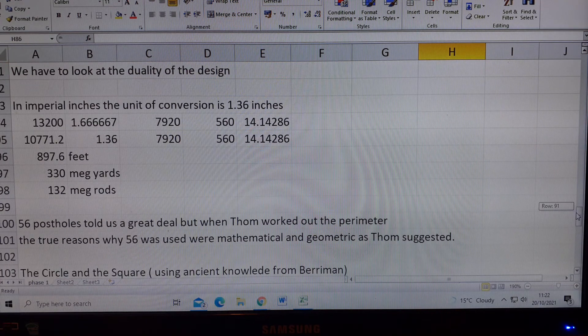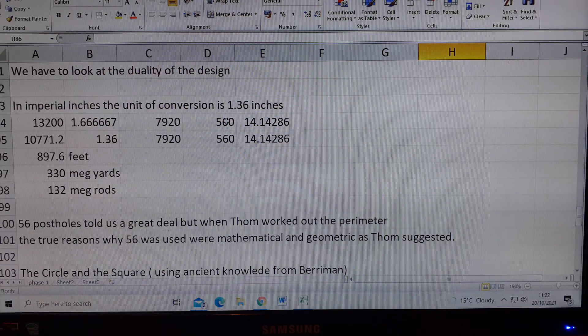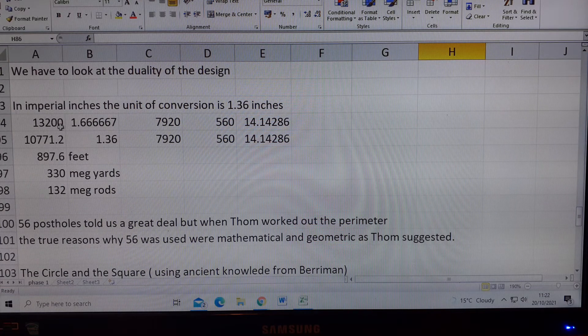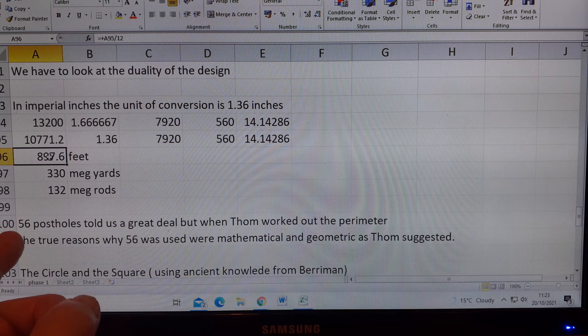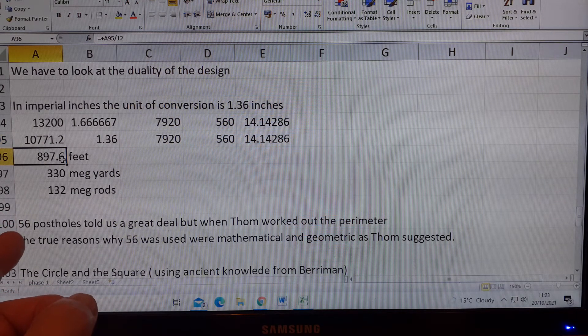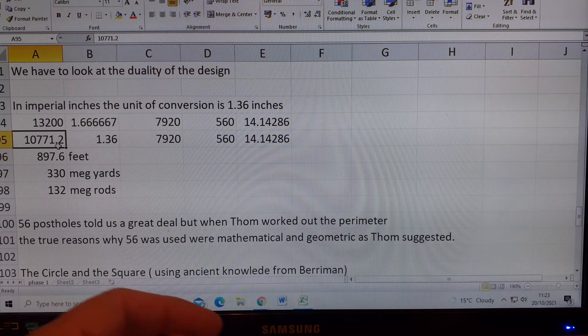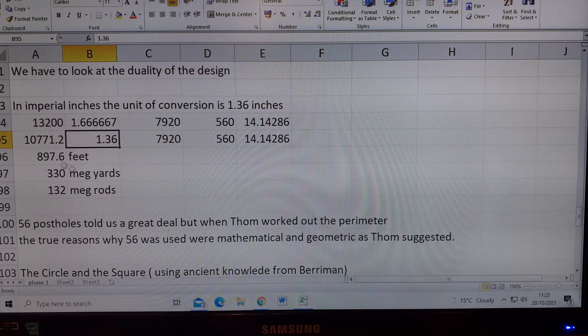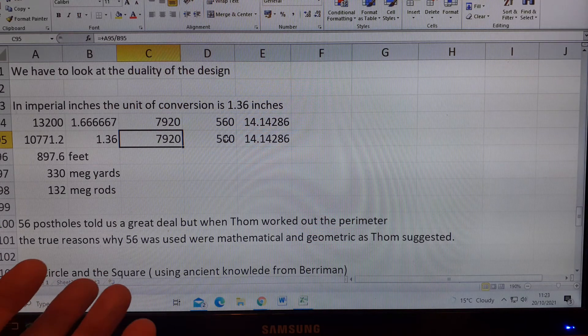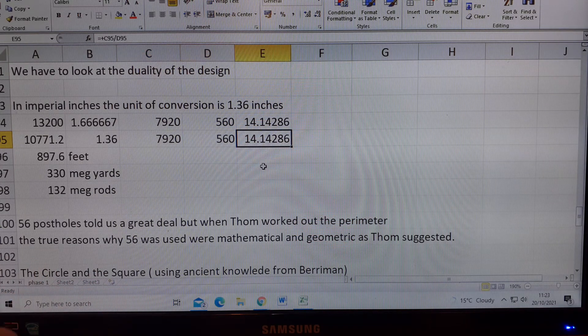In imperial inches, the unit of conversion is 1.36 inches. The circle is 897.6 feet, the Aubrey circle, which is 10771.2 imperial inches. So we divide that by 1.36, we get 7920. Divided by 560, we get 10 root 2.